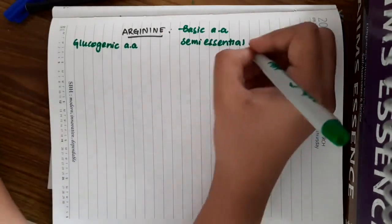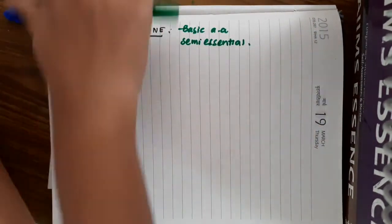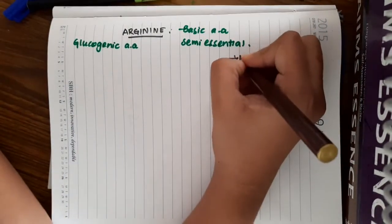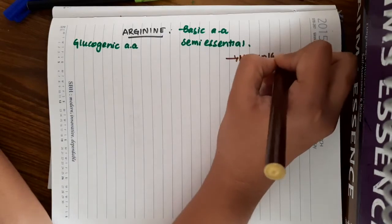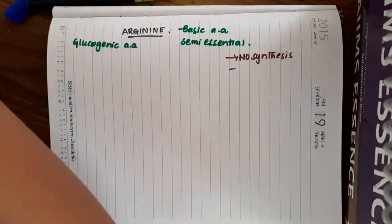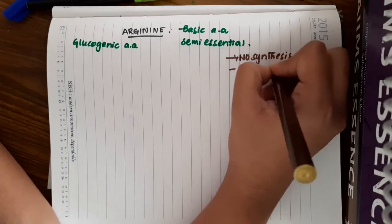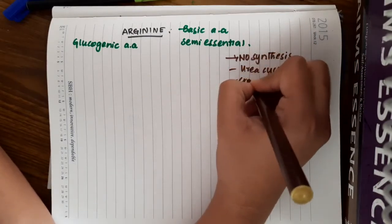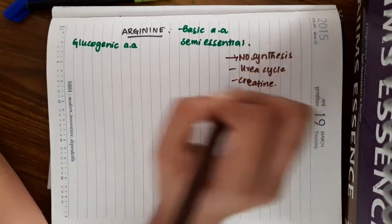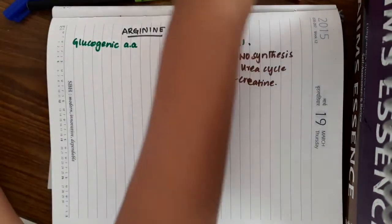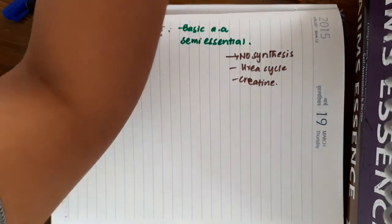If you see the functions of this arginine, this arginine can be used in the synthesis of nitric oxide. Arginine is used in urea cycle and also creatinine synthesis. We will see some important pathways of arginine.